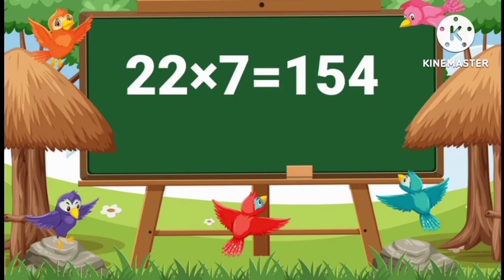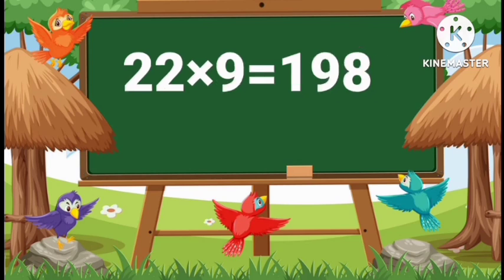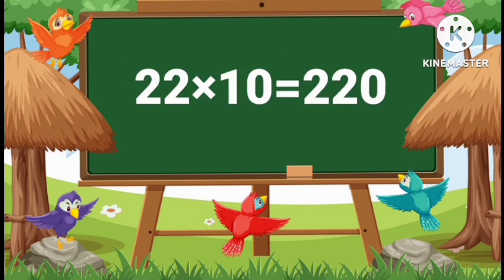22 sevens are 154. 22 eights are 176. 22 nines are 198. 22 tens are 220.